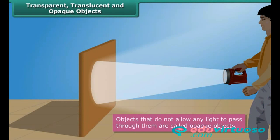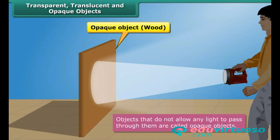Objects that do not allow any light to pass through them are called opaque objects. As a result, we cannot see through them. When light falls on an opaque object, its shadow is formed on the other side of it. Wood, sheets of metal, dark-colored plastics, and rocks are examples of opaque objects.